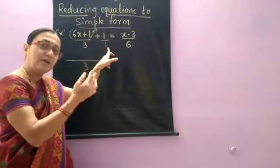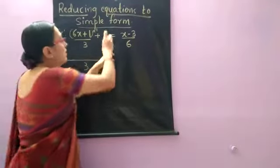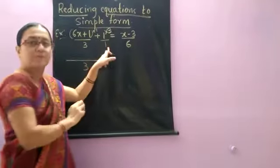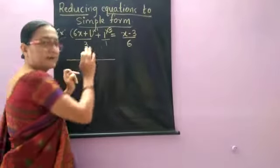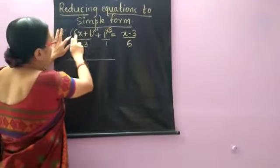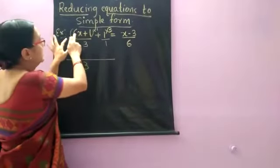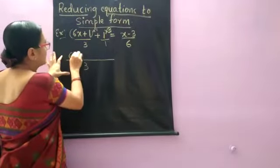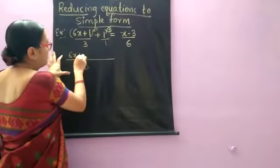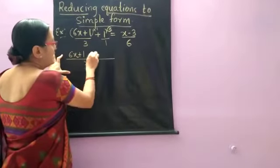Now 1 into 3 is LCM. So we have to equate the denominator to 3. 1 times 3 is 3. We leave the RHS now. Now multiply this 1 with the first term and with the second term here. 6x into 1 is 6x. 1 into 1 is plus 1. 3 into 1 is plus 3.